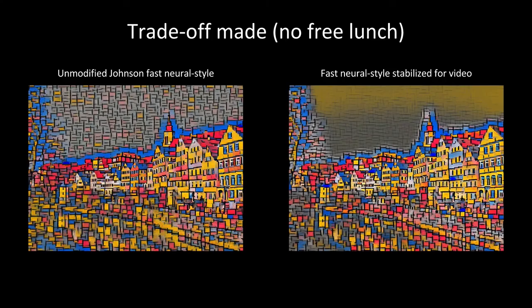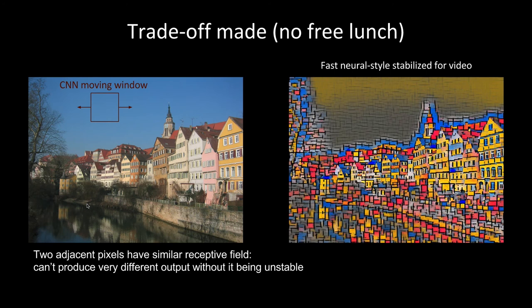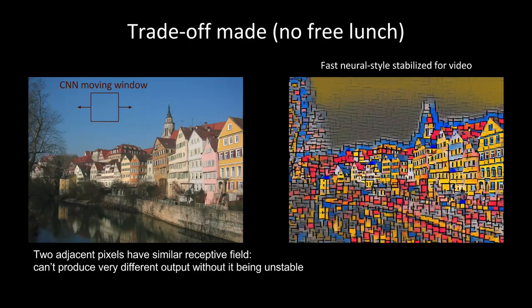There's no free lunch though. As soon as you change the loss function, you affect everything — and if there's a way for a network to cheat, it will. What happens with the sky in the classic Tübingen image: the sky is all blue, so our network trained with stabilization cannot produce a rich-looking sky. Because adjacent pixels have the same receptive field, it produces a bland color with little variation. By tweaking the weight we can make the sky more uniform, but then we start losing other features — there's a tradeoff.